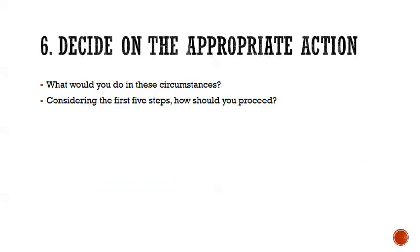Finally, step six: decide on the appropriate action. What would you do in these circumstances? Take all five steps together and decide how you should proceed — you have to make a decision and say, 'I would do X because...' That is the six-step process you're going to use to solve the cases that you'll be assigned. There is a template on UTC Learn under the case folder in the course materials that you can use to complete your analysis of the case.